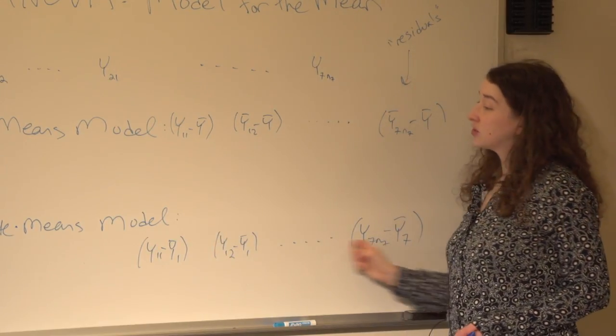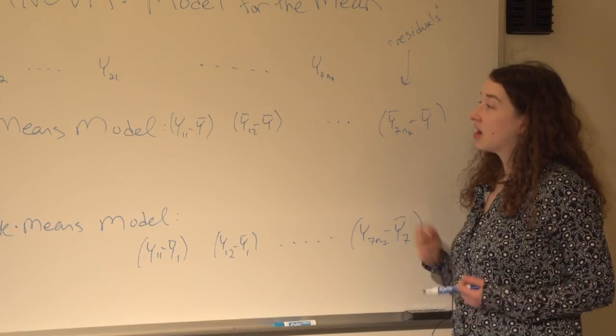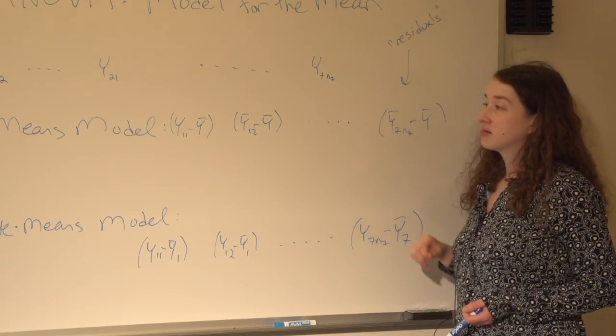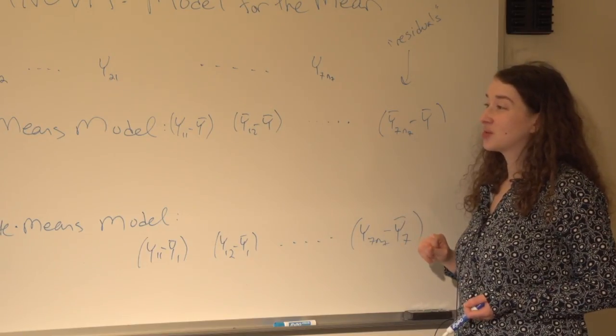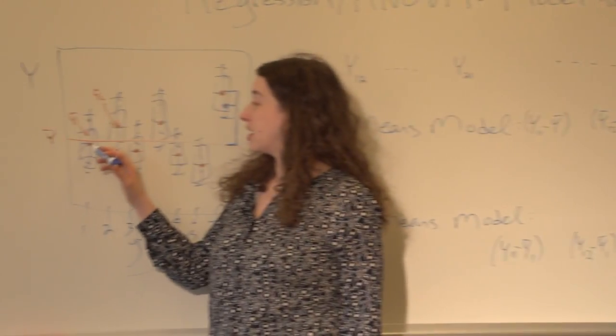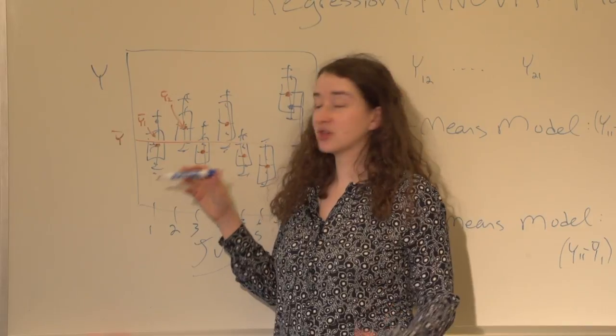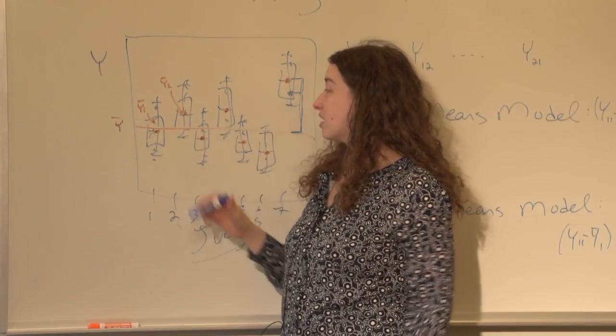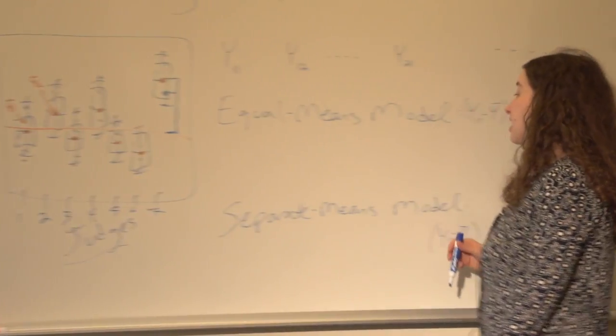It'll always be true that the residuals from the separate-means model are on average a bit smaller, or no bigger than the residuals from the equal-means model, just because if I'm a point in the first group, on average I'll be closer to the average of the first group than the average overall, just because I'm contributing more to that first average.